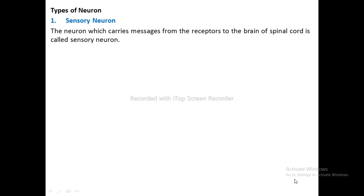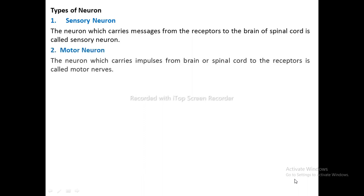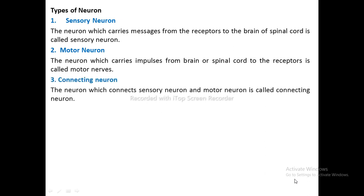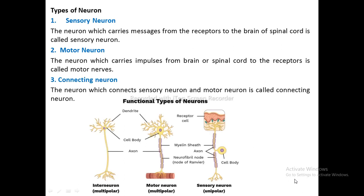Types of Neuron: Sensory Neuron — carries messages from the receptor to the brain or spinal cord. Motor Neuron — carries impulses from the brain or spinal cord to the effector organs. Connecting Neuron — connects sensory neuron and motor neuron. Neuron types by polarity: interneuron is multipolar, motor neuron is multipolar, and sensory neuron is unipolar.